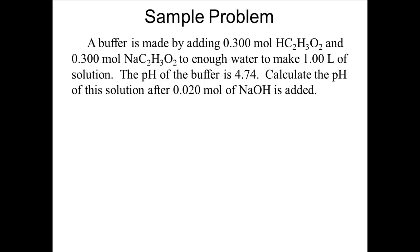Let's do this sample problem. A buffer is made by adding 0.300 moles of HC2H3O2 (acetic acid) and 0.300 moles of NaC2H3O2 (sodium acetate) to enough water to make 1.00 liter of solution. The pH of the buffer is 4.74. Calculate the pH of this solution after 0.020 moles of NaOH is added. When adding strong acid or strong base to an existing buffer, we need to use moles, not concentration, for the stoichiometry part. If given concentrations, we need to convert them into moles.